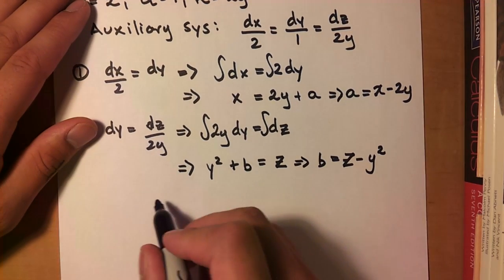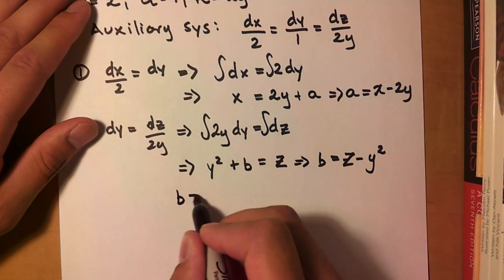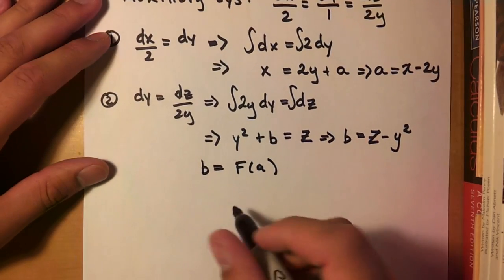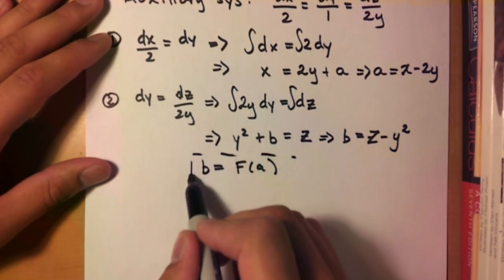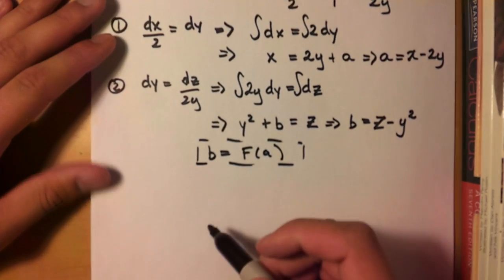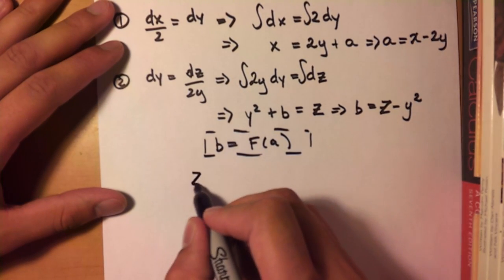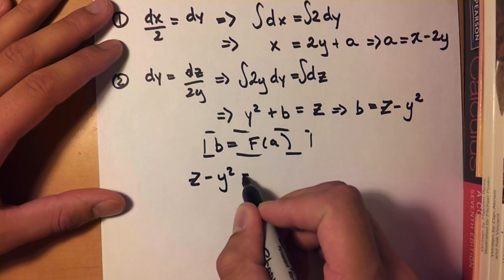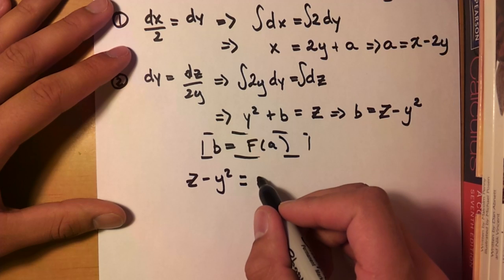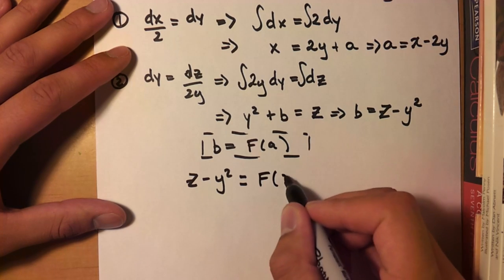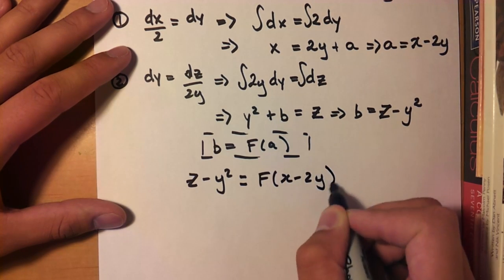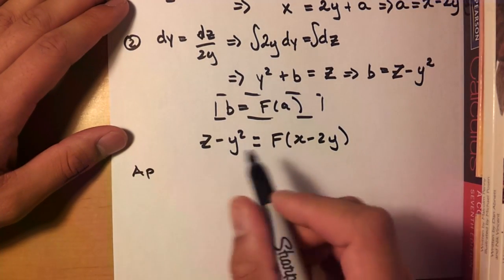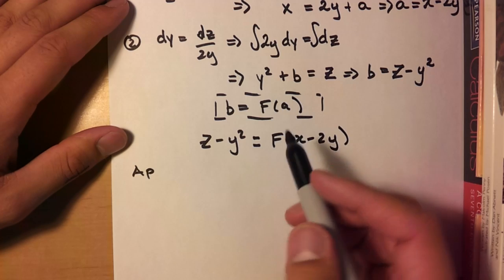Alright, so now we put it in that more useful form that I told you. b is equal to f of a. Alright, this is our magic form. Okay, so our b here is z minus y squared. Right, it's right there. Which is equal to f of x minus 2y. So the only thing we have to do now is apply our boundary condition. Because this is our general solution.